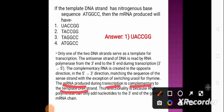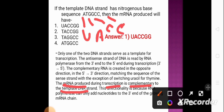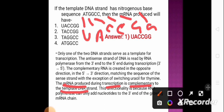So for the template strand ATGGCC: A pairs with U (thymine is switched to uracil in RNA), T pairs with A, G pairs with C, G pairs with C, C pairs with G, C pairs with G — giving UACCGG, which is the correct answer. This directionality exists because RNA polymerase can only add nucleotides to the 3' end of the growing mRNA chain.